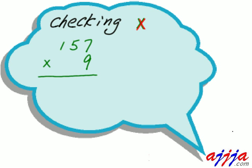Checking multiplication. How we check? That's right. We're going to use division, right? Because division is the opposite of multiplication.